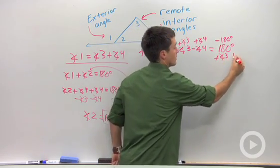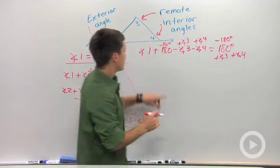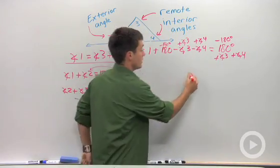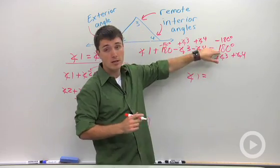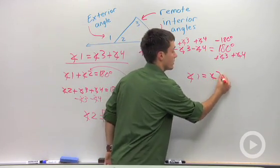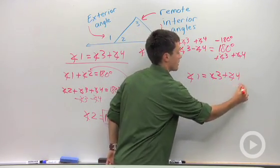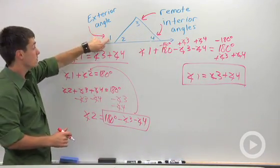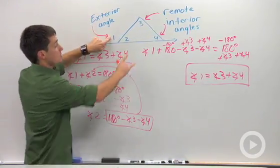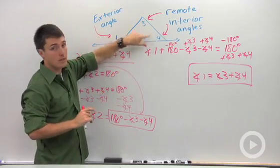Then all I have left is angle one is equal to 180 and negative 180 is zero. So we have angle three plus angle four, which has proven that the remote exterior angle, excuse me, the exterior angle is equal to the sum of the remote interior angles.